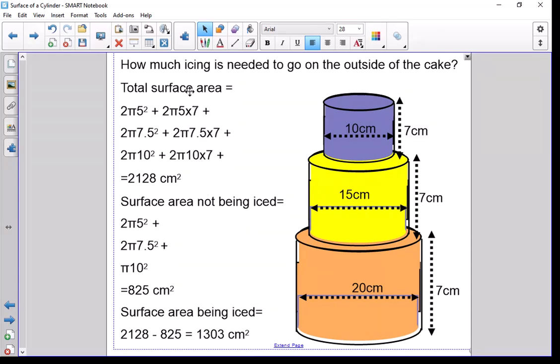So the total surface area of the top would be these two first terms. And then if we work our way down, we've got 7.5 from half of 15. So this second line here is the yellow tier. And the third line here, if you look here, 10 is half of 20, and that would be the third line, the bottom tier.